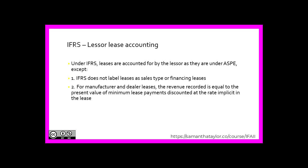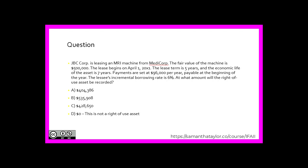Let's look at a question. JVC Corp. is leasing an MRI machine from MediCorp. The fair value of the machine is $500,000. The lease begins on April 1st, 20X1. The lease term is five years and the economic life of the asset is seven years. Payments are set at $96,000 per year, payable at the beginning of the year. The lessee's incremental borrowing rate is 6%. At what amount will the right-of-use asset be recorded? Is it A: $404,386; B: $535,908; C: $428,650; or D: zero — this is not a right-of-use asset?